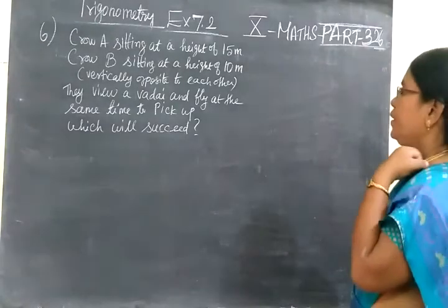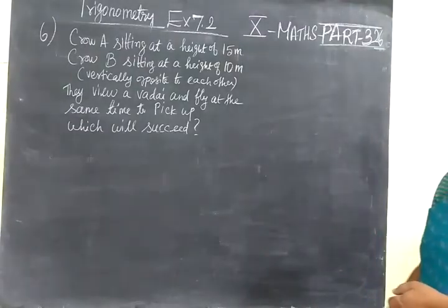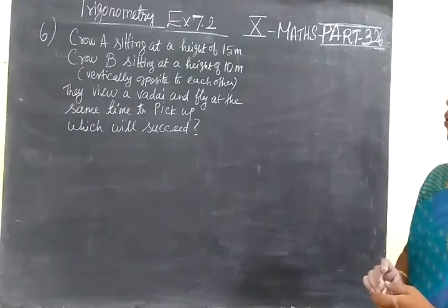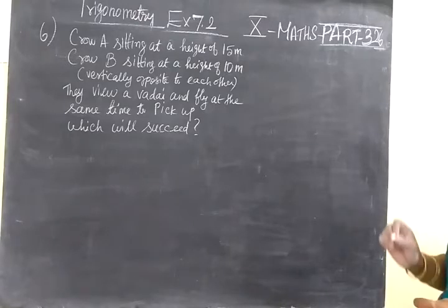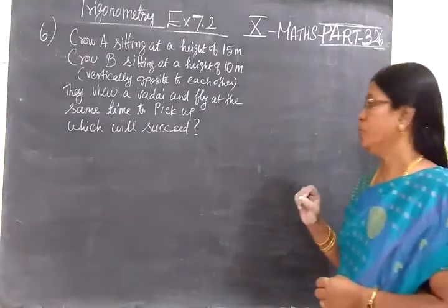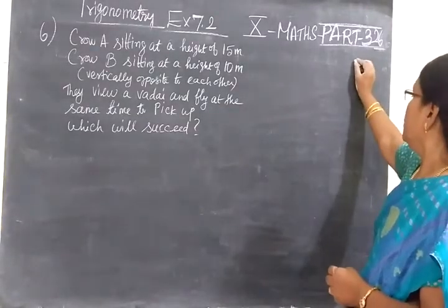Now we will see problem 326. This question is given: Crow A sitting at a height of 15 meters, Crow B sitting at a height of 10 meters, vertically opposite to each other.